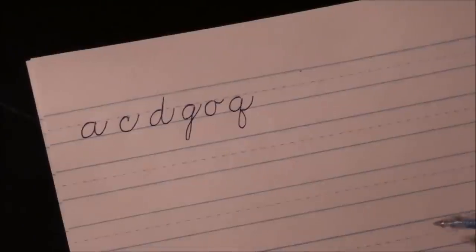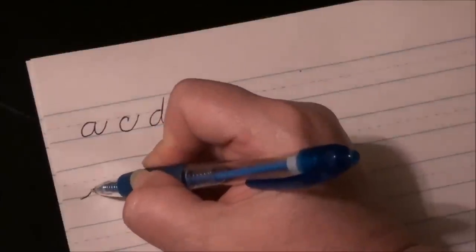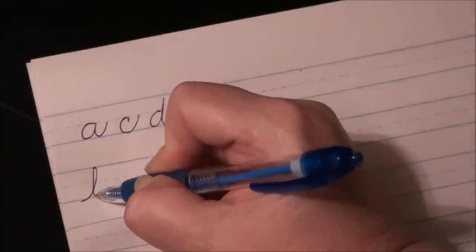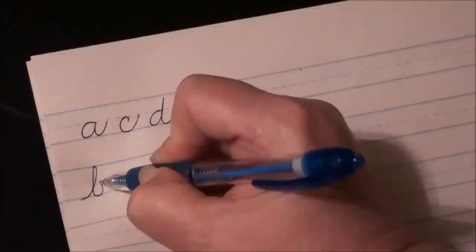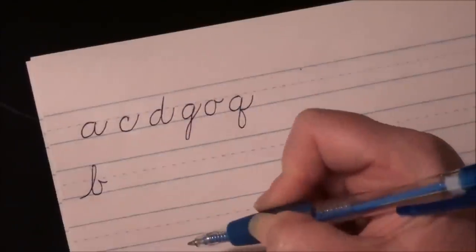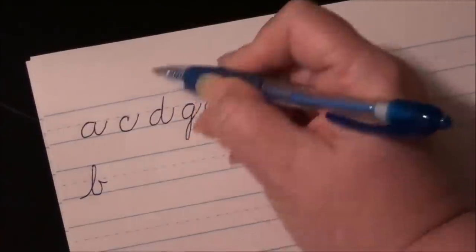Now the looping letters. Loop to the headline, come down, tuck it in, and smile. That's your B. Then F, no, E, oops, almost forgot it again.